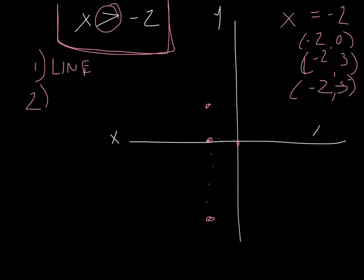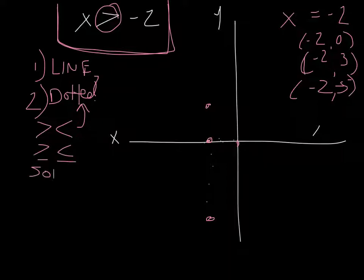Now, second thing I said, dotted, or dashed, people call it different things. Dotted or solid? Really easy to determine. If our inequality is like that, it's dotted. If it has an equal to sign, it's solid. Okay? So solid if it does that, dotted if it's the other one.